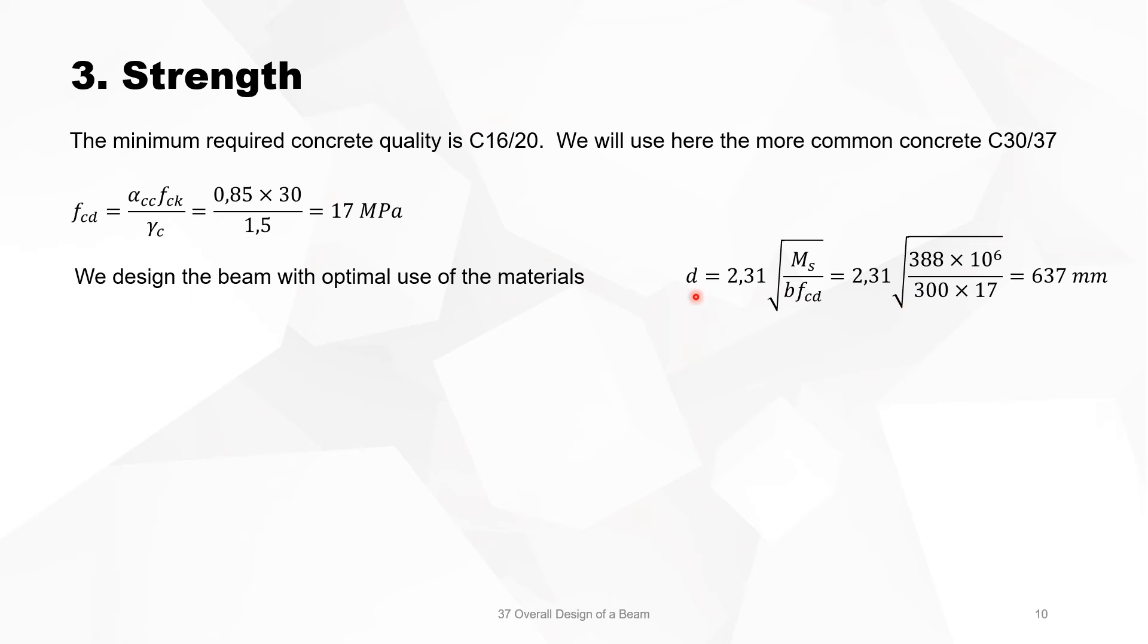Then we know that the optimum is 2.31 square root of the bending moment divided by B·f_cd. We put in some numbers and we have 637 mm, so for strength reasons, the effective depth should be 637 mm.